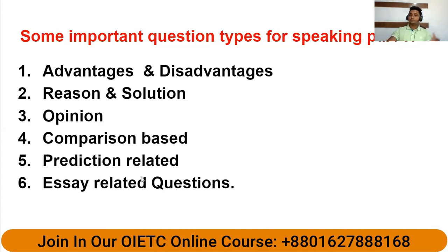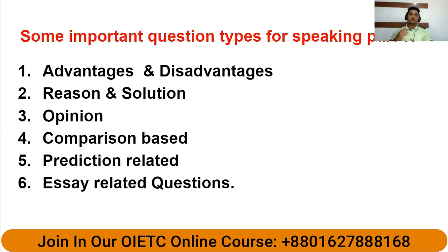Number five is prediction-related questions. The examiner may ask you to predict something — for example, what might happen after one year or in the future. So prediction and future-related questions are also part of Speaking Part 3, and candidates should be prepared for 2 to 4 such questions as well as essay-related questions.